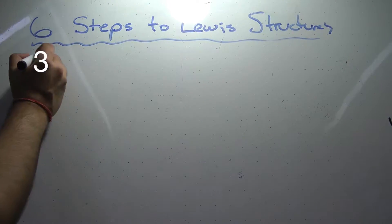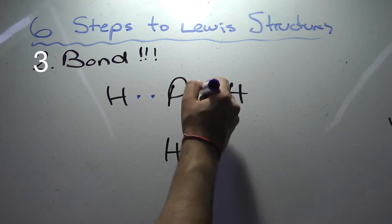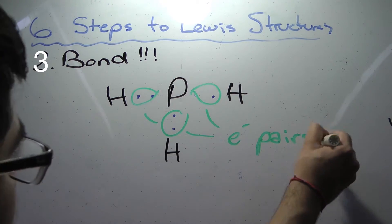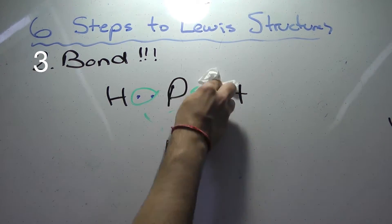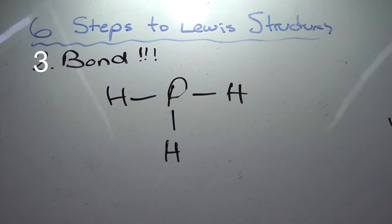Step 3: Place 2 electrons, 1 pair of electrons, in each bond. Another example of this would be a bonding pair for each bond. In the case of PH3, we put a pair of electrons in each bond with hydrogen, using 6 out of 8 of our electrons.